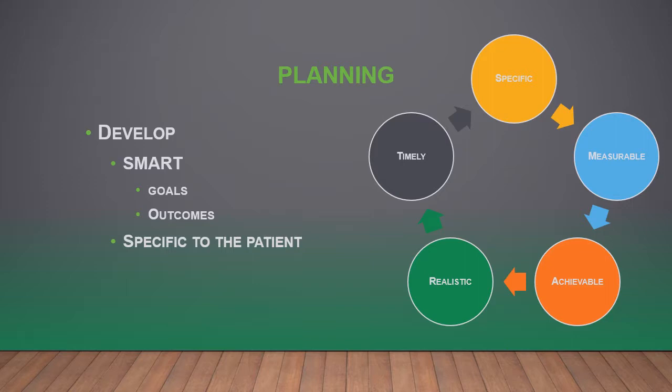Goals have to be achievable. If the patient is admitted for severe chronic pain due to metastatic cancer and their pain scale has never been below a seven, writing 'the patient will be pain-free' is probably not achievable. If a patient has not been ambulatory in three years, writing 'the patient will ambulate 50 feet in the hallway three times a day' is probably not achievable. Also, if a patient smokes and is not interested in quitting, writing 'the patient will participate in smoking cessation' is not achievable — the patient has to be agreeable as well.